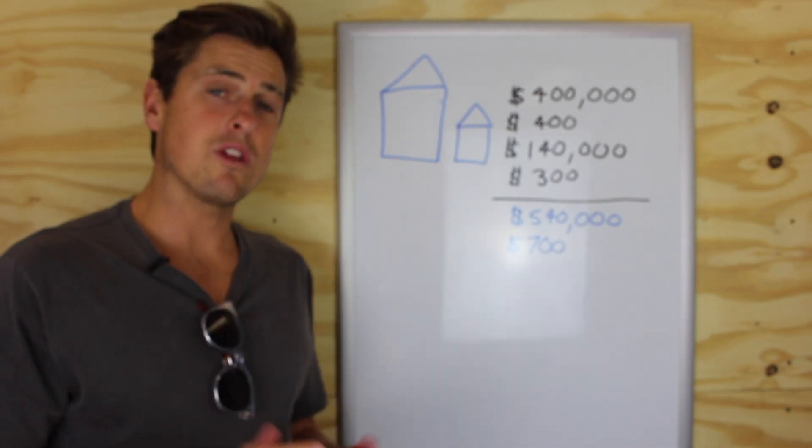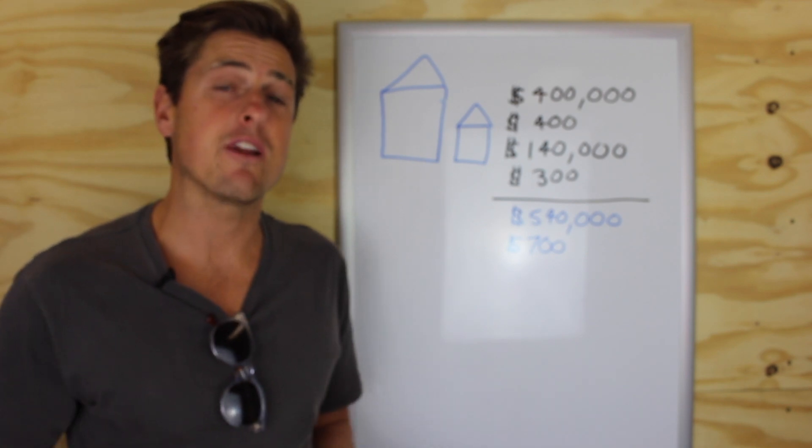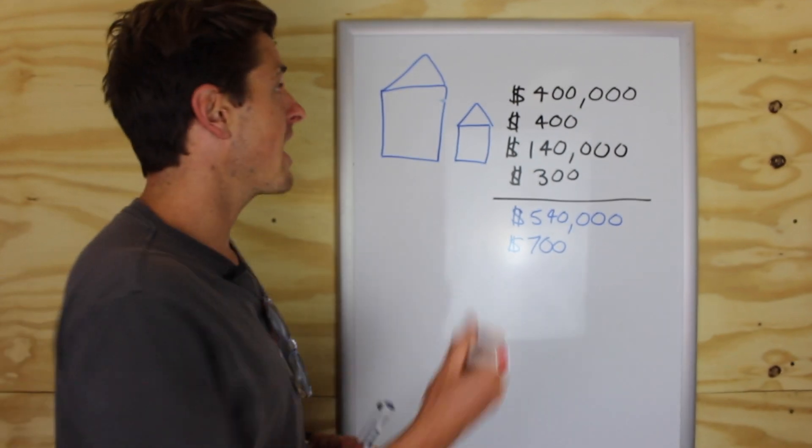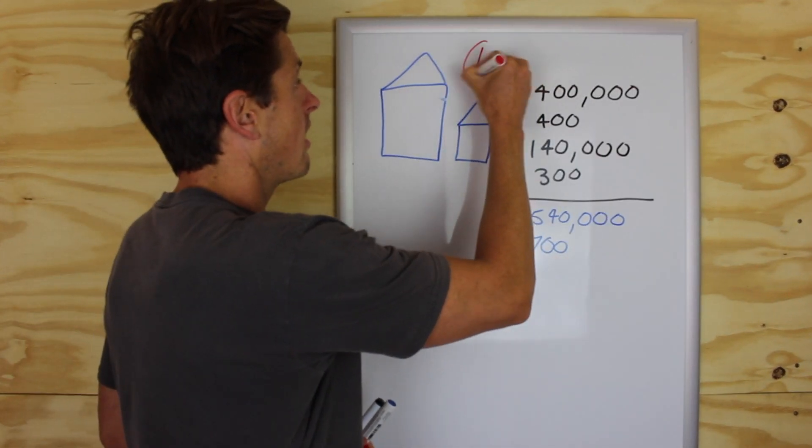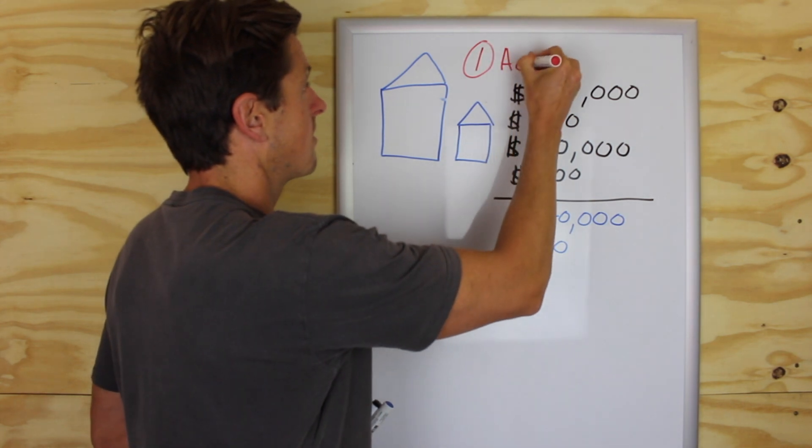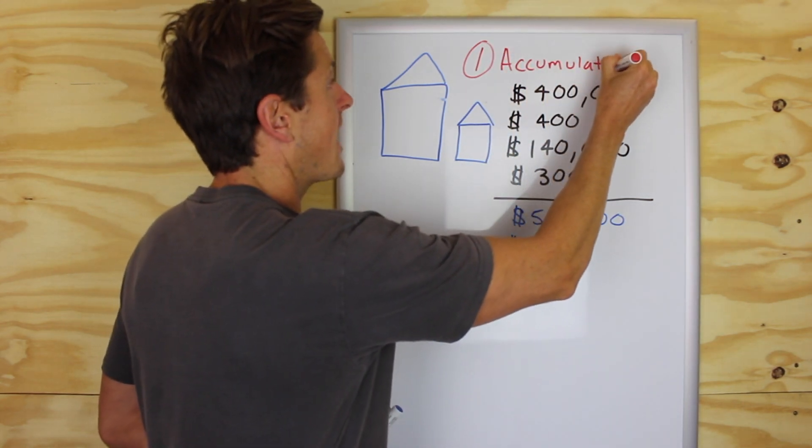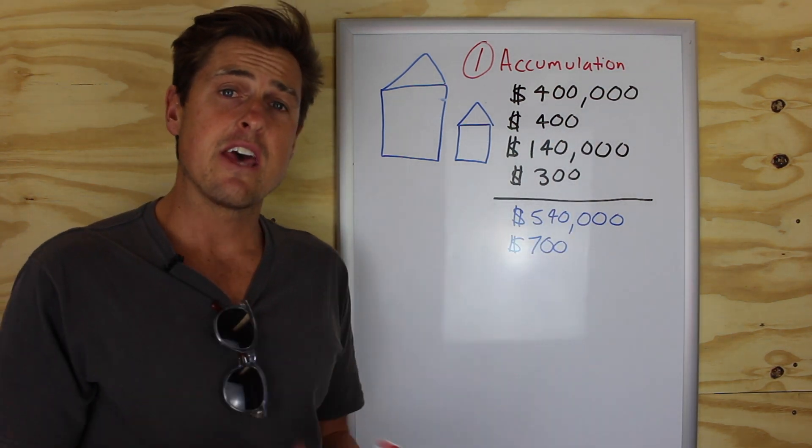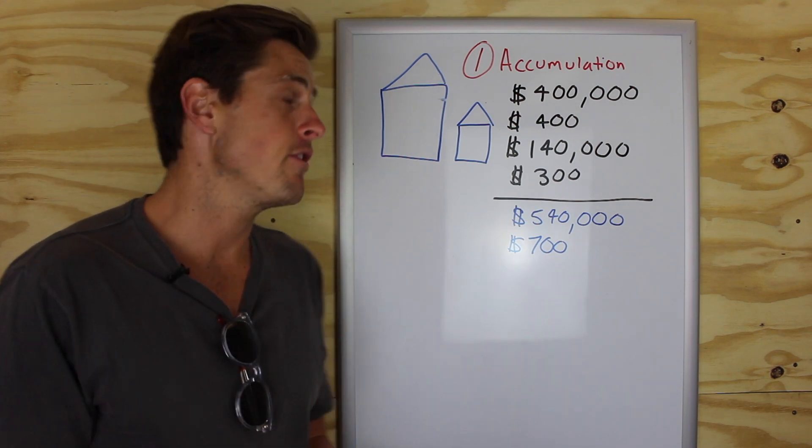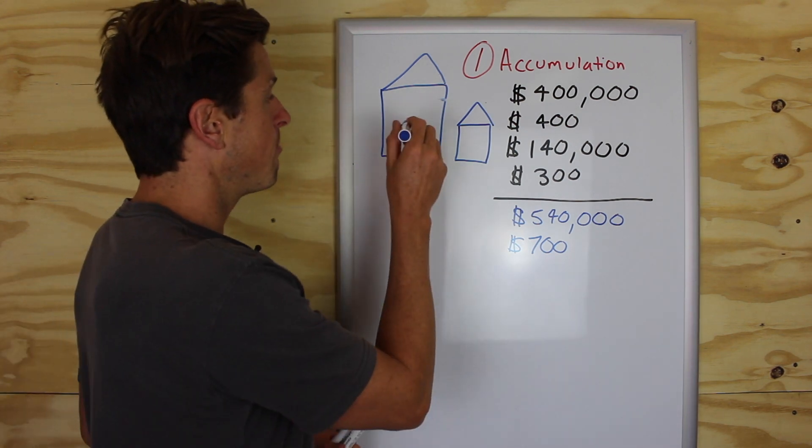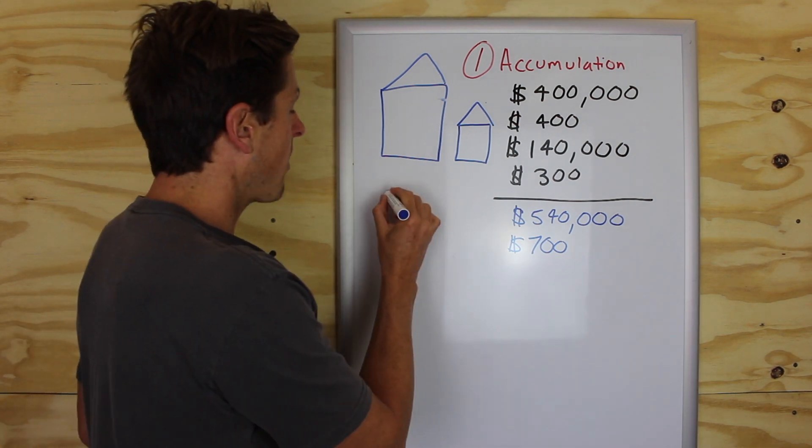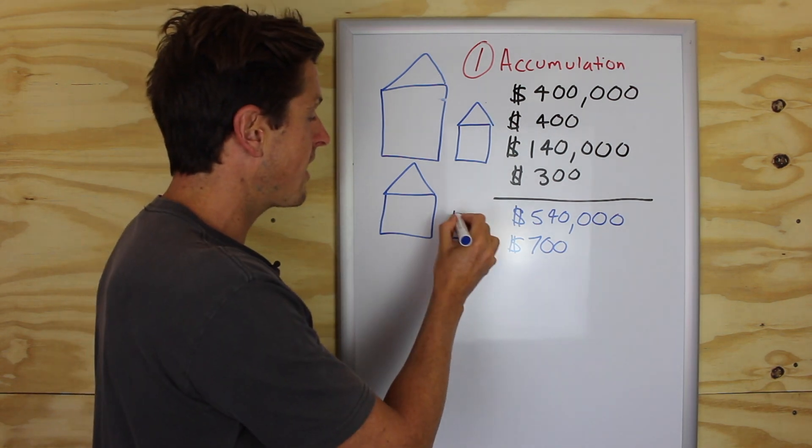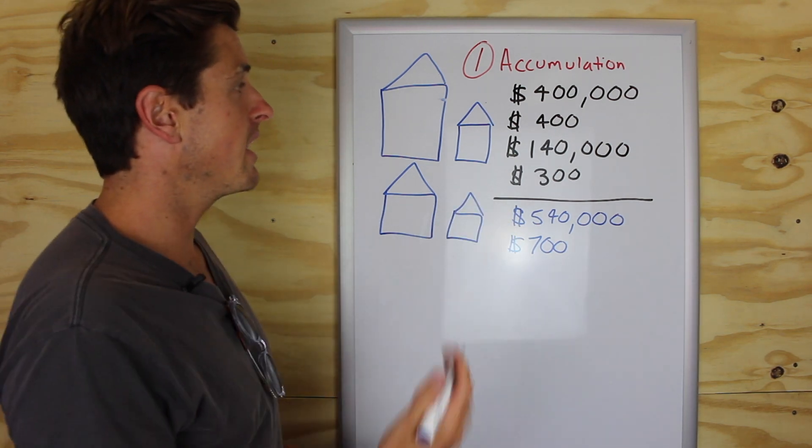Now, what's really cool about this strategy, which is the two properties to financial freedom, is there's a bunch of different ways you can do it. Now, I call this first stage the accumulation phase. And as it states, this is the phase that you go out there and you actually buy the assets that are going to make you financially free in the future. Now, whether you go out there and buy one home and build a granny flat, or you go out there and you buy two homes and then come back and build two granny flats in the future, it's completely up to you.